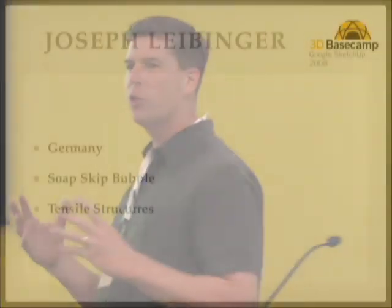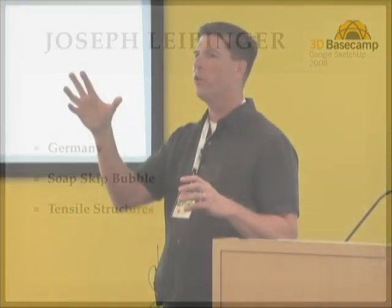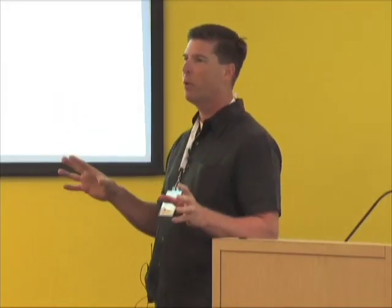Joseph has created a tool called Soap Skin Bubble. If you want to do the mast of a sailboat, you draw a triangle, say Soap Skin Bubble, and tell it how much wind you want — it's really amazing. Then there are tensile structures as well. And there's Todd Birch with Make Faces — CAD cleanup scripts that let you take a poorly drawn AutoCAD floor plan, bring it into SketchUp, and clean it up, saving you hours or days.